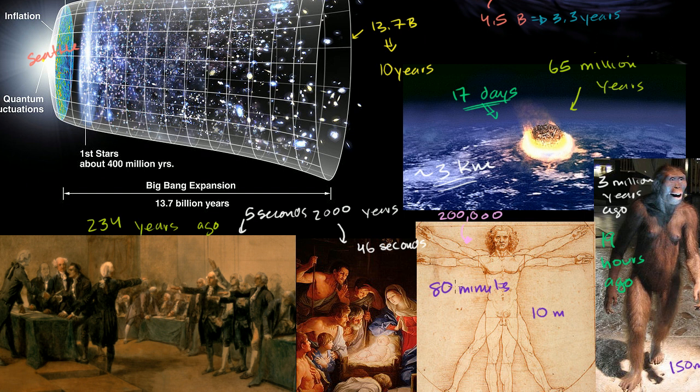The birth of Jesus, 2,000 years ago, would be 10 centimeters. 10 centimeters on a timeline that stretches from San Francisco to Seattle. And then finally, the Declaration of Independence would be 1 centimeter on a timeline that stretches to Seattle. So anyway, I don't know if that put things in more or less perspective, but it was worth giving it a shot.